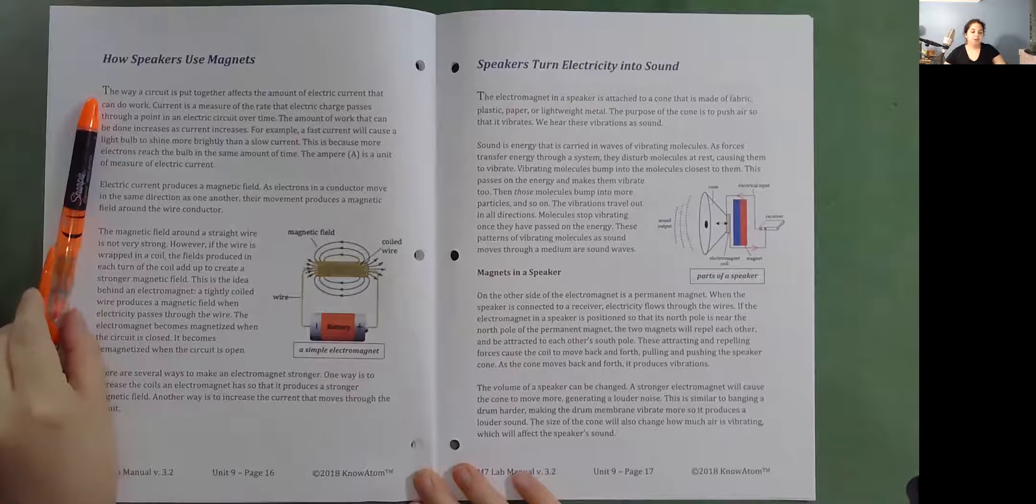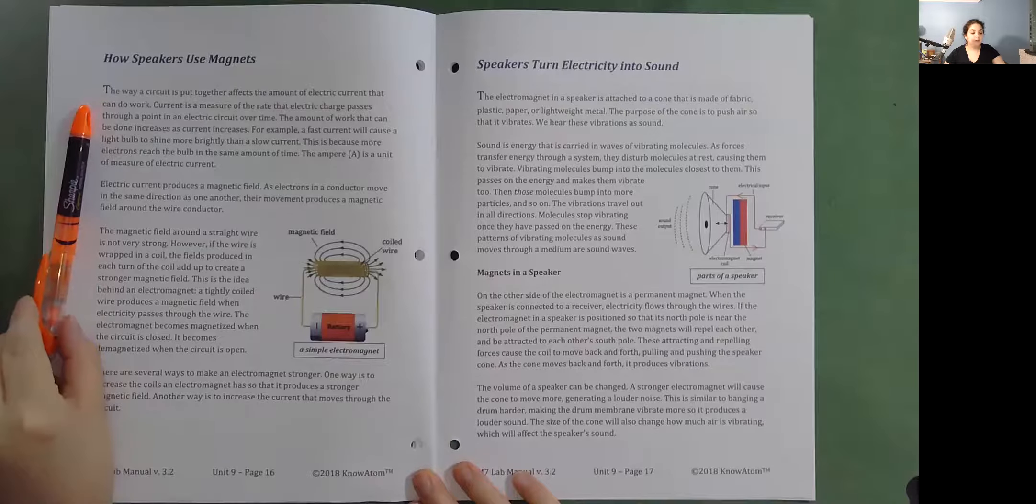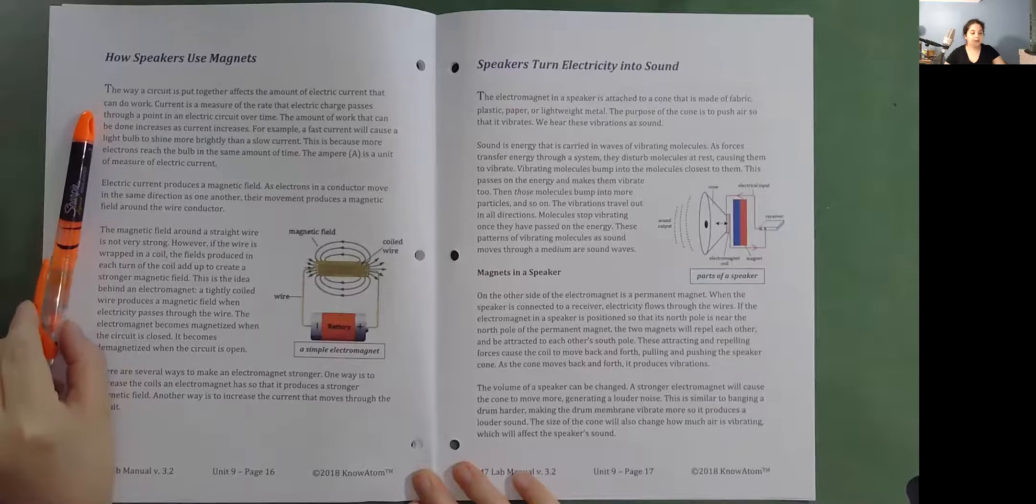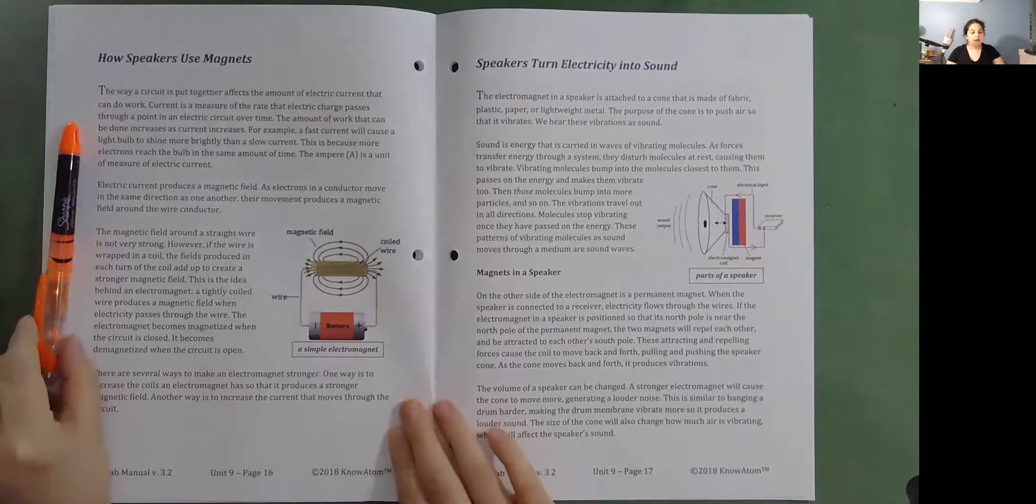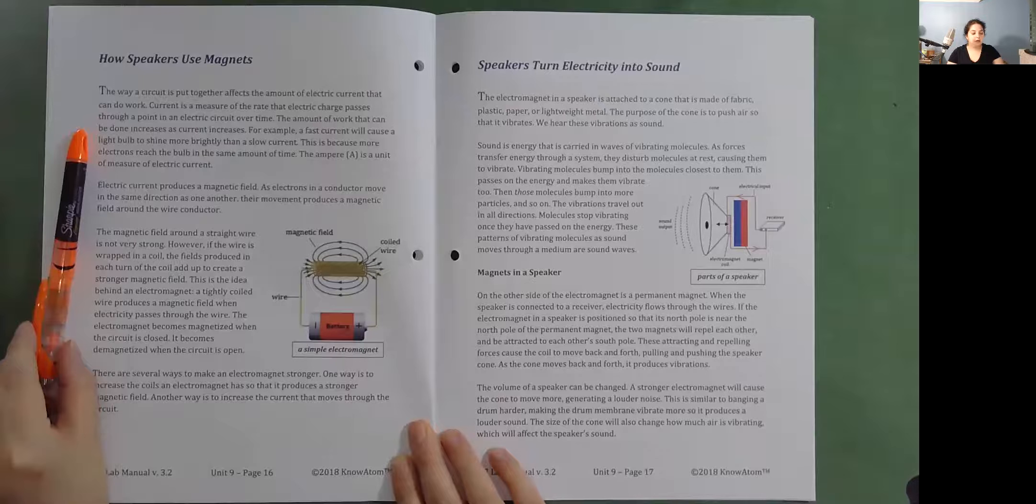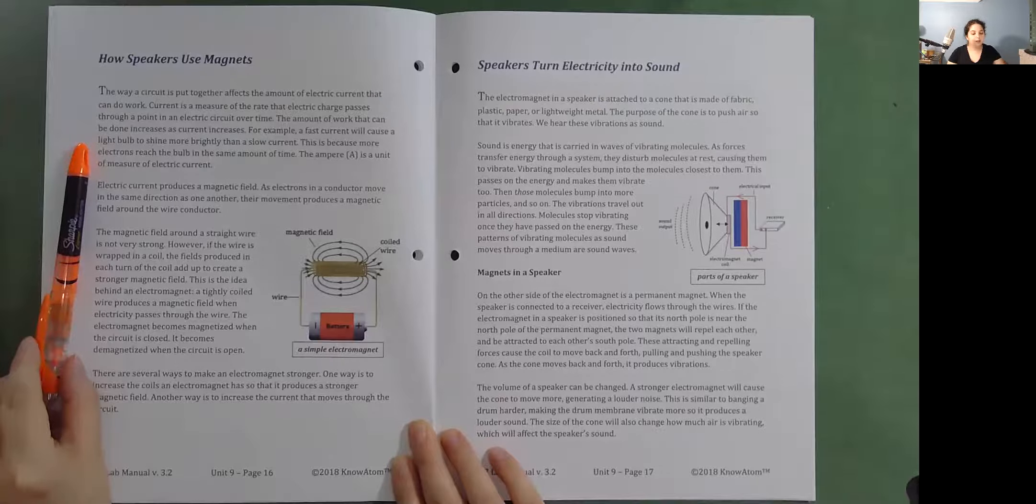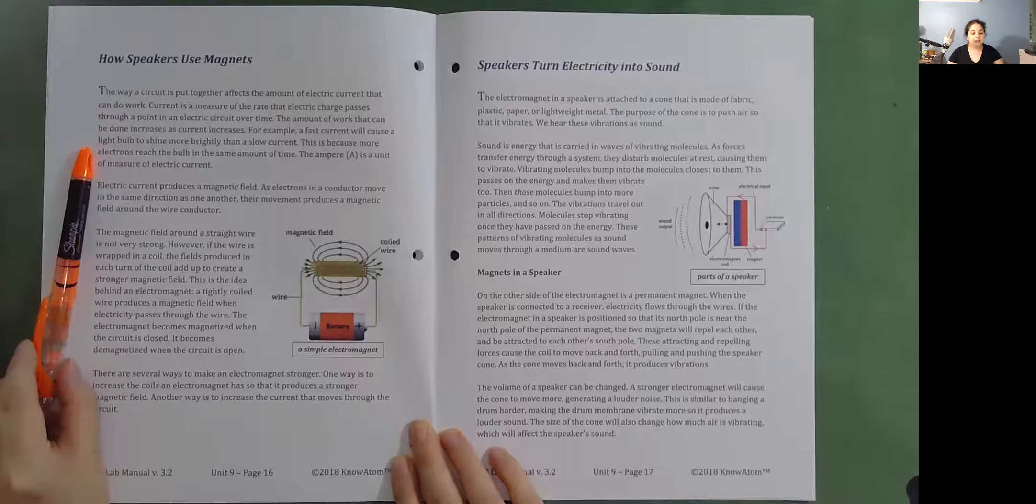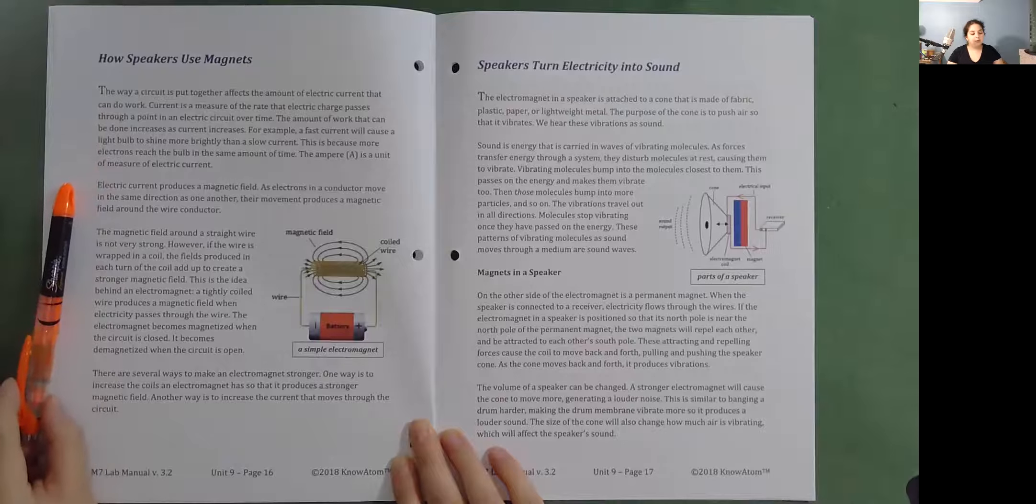The way a circuit is put together affects the amount of electric current that can do work. Current is a measure of the rate that electric charge passes through a point in an electric circuit over time. The amount of work that can be done increases as current increases. For example, a fast current will cause a light bulb to shine more brightly than a slow current. This is because more electrons reach the bulb in the same amount of time. The ampere is a unit of measure of electric current.